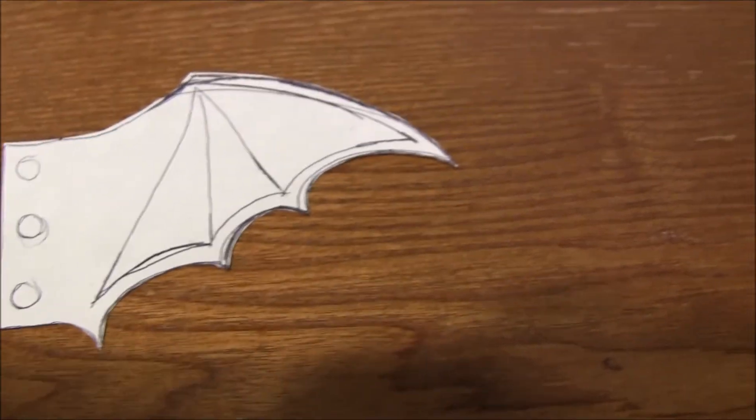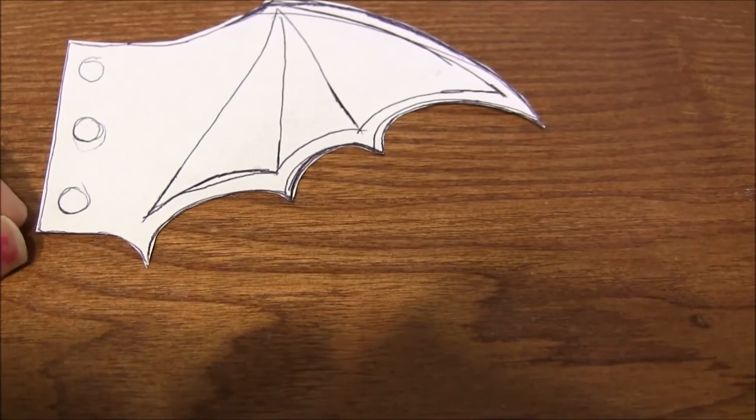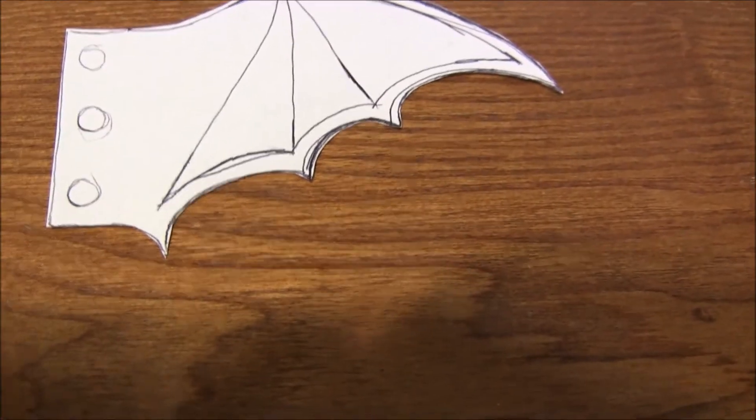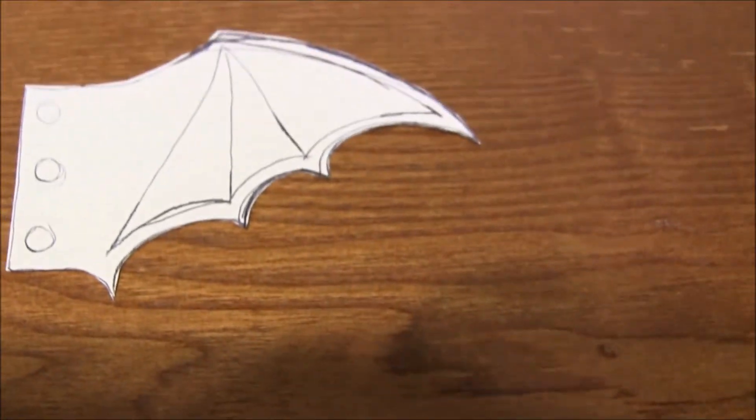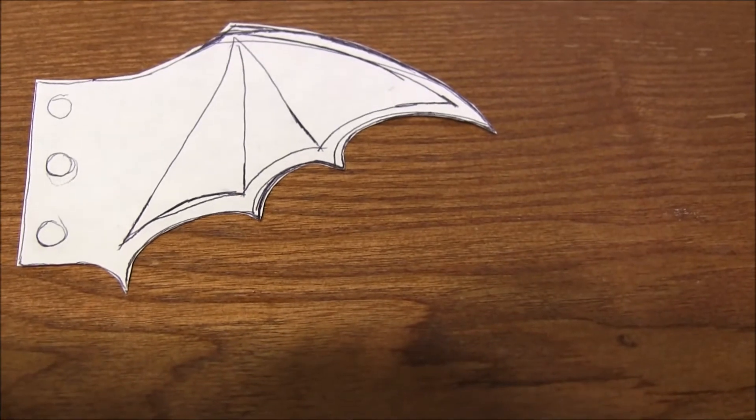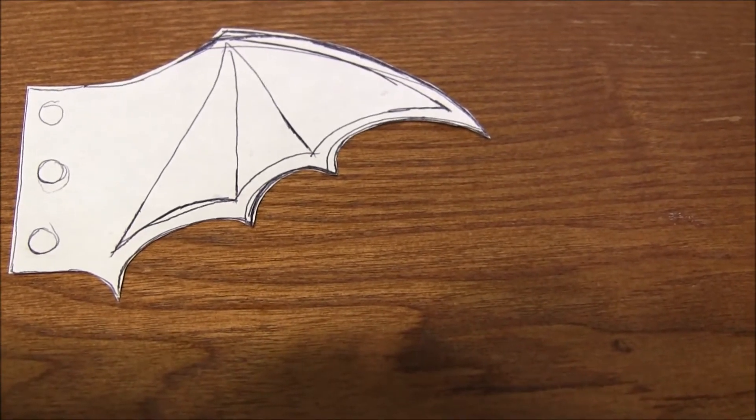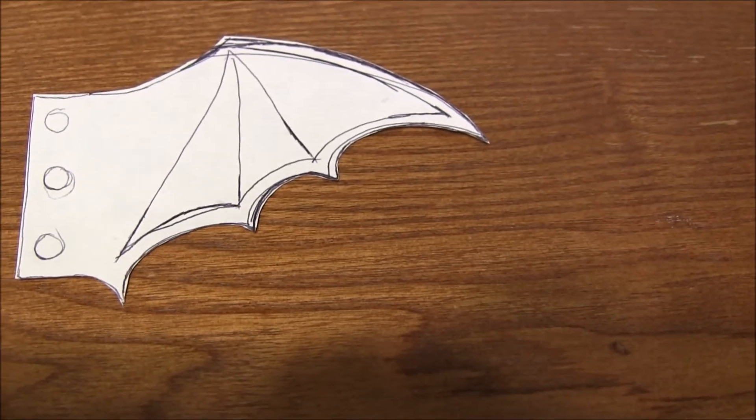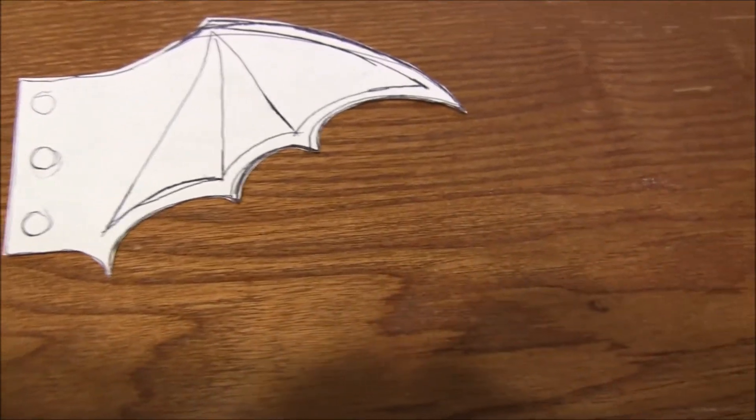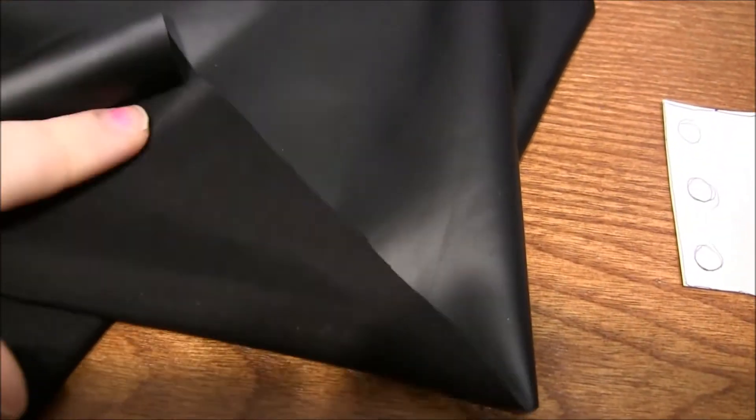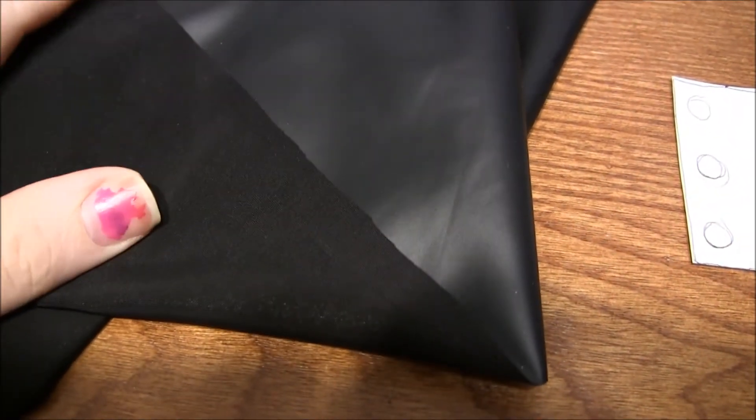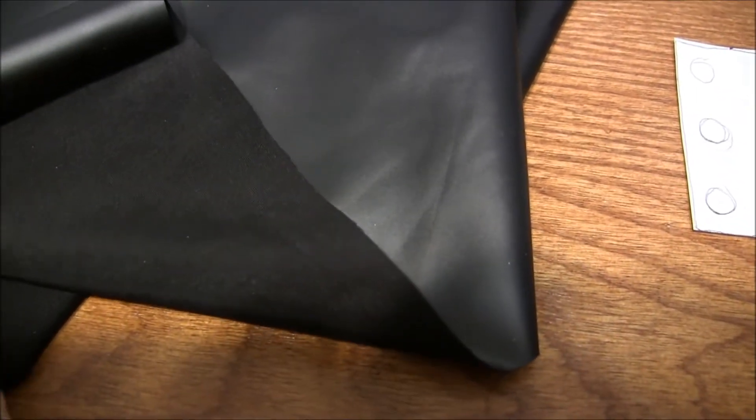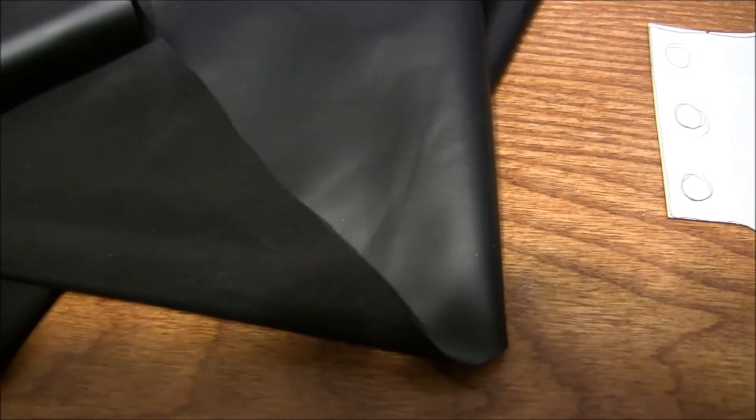You're going to add at least a fourth of an inch all the way around. You can trace the pattern piece onto the back of your fabric. The back is kind of matte because this is fake leather. Trace around and then when you cut it out, add the seam allowance.